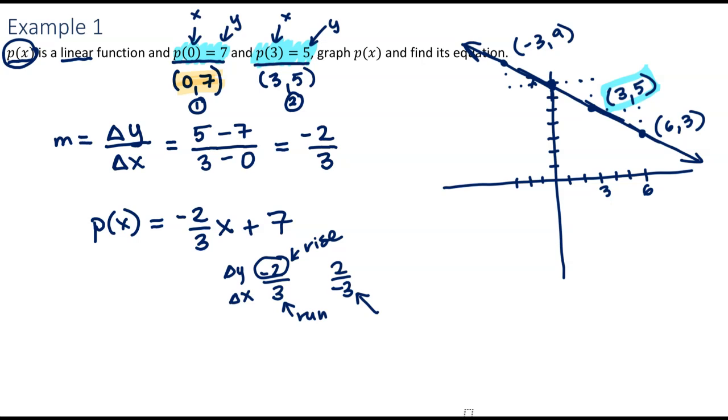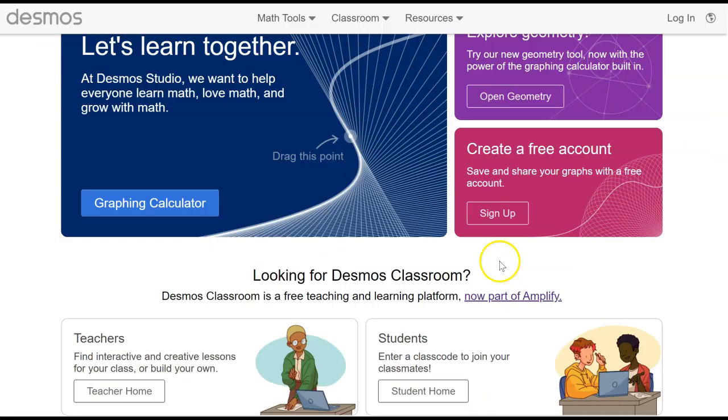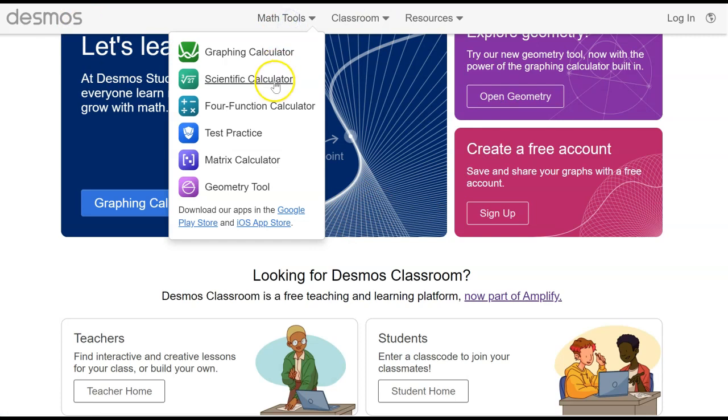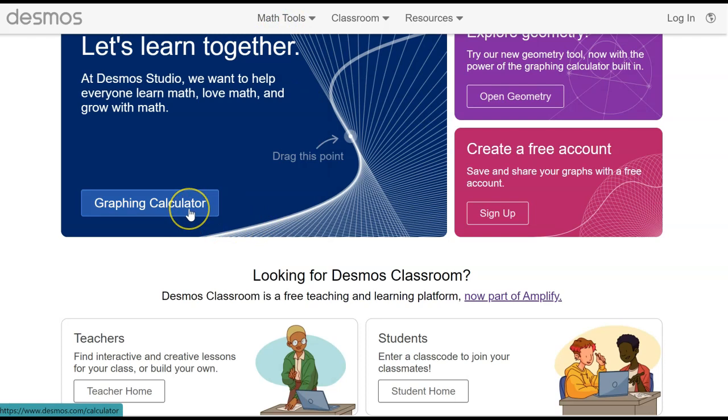I also want to take a second here to show you how to graph things in Desmos in case you don't already know. I will recommend Desmos for probably any graphing you do all quarter long. It is okay to use Desmos on online quizzes unless I say otherwise. So this is a great tool. All right. So this is what you should see if you head over to desmos.com, D-E-S-M-O-S dot com. And there's lots of things here. For example, you can find a scientific calculator in the math tools. But mostly, we should be able to do what we need to in the graphing calculator.